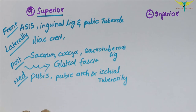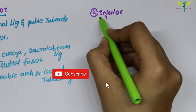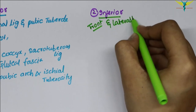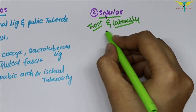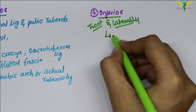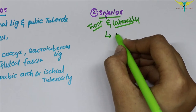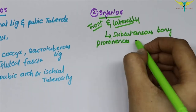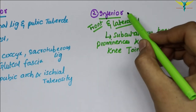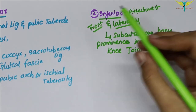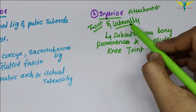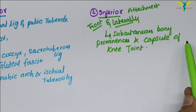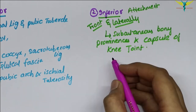Coming to the inferior attachment, inferiorly on the front of the thigh and laterally, it is attached to the subcutaneous bony prominences and the capsule of the knee joint.